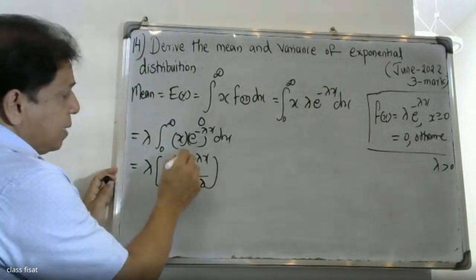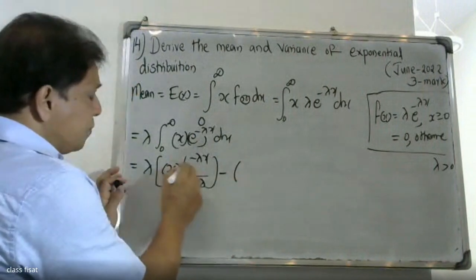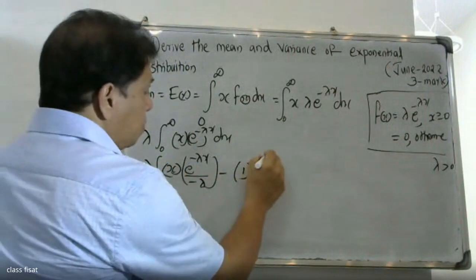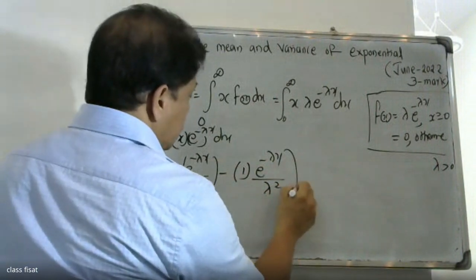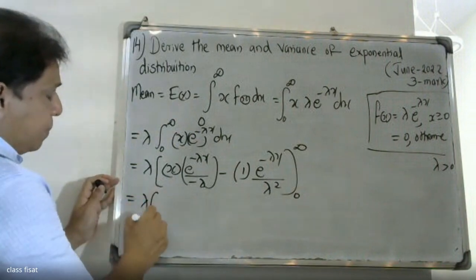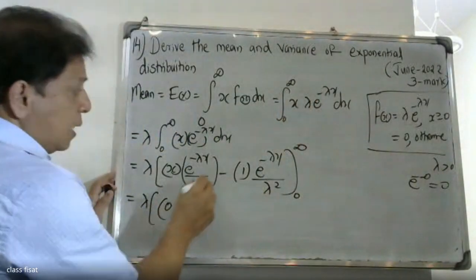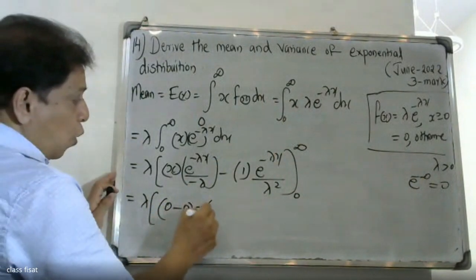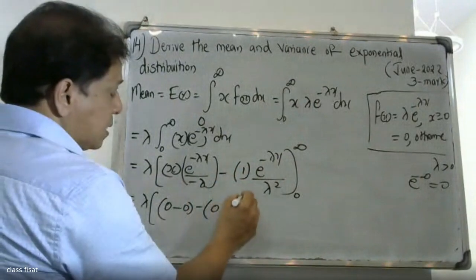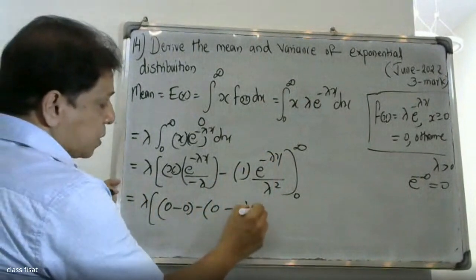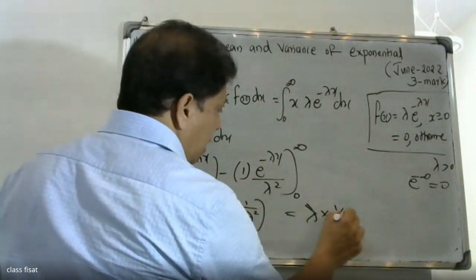Applying integration by parts: x is the first function and e raised to minus lambda x is the second. The derivative of x is 1. Integrating gives e raised to minus lambda x divided by minus lambda. Evaluating the limits from 0 to infinity, the result simplifies to 1 by lambda.